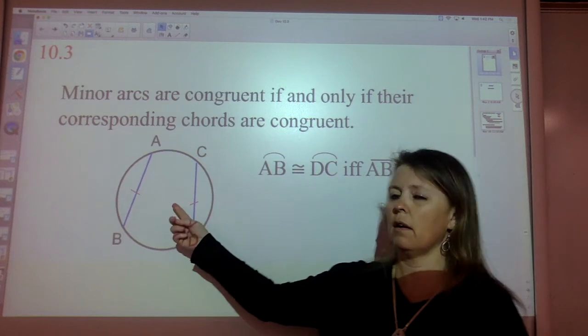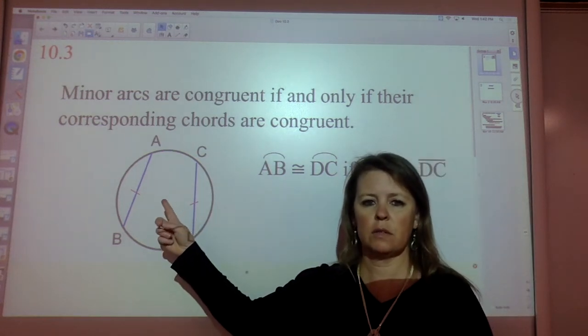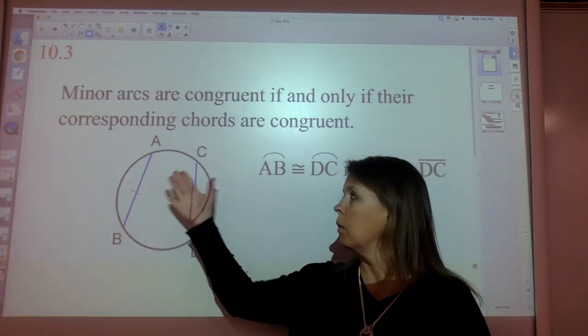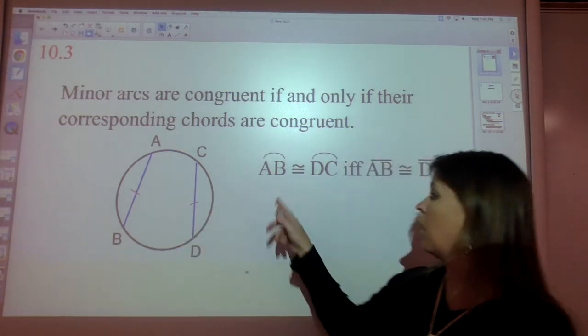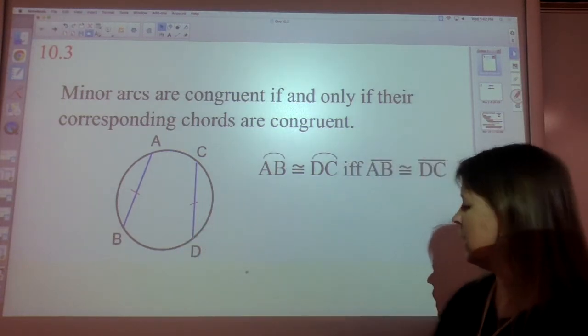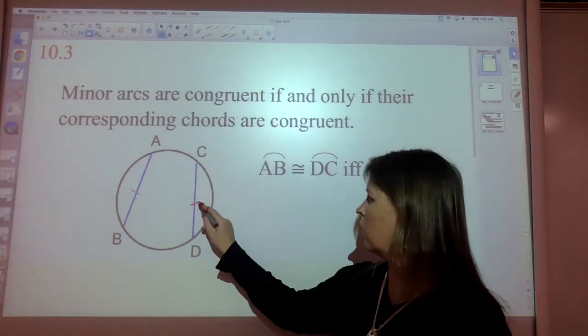notice we don't have a center anymore. Without a center, we don't have a central angle. Without a central angle, we don't have congruent arcs. But we can know that those arcs are congruent if their chords are congruent.